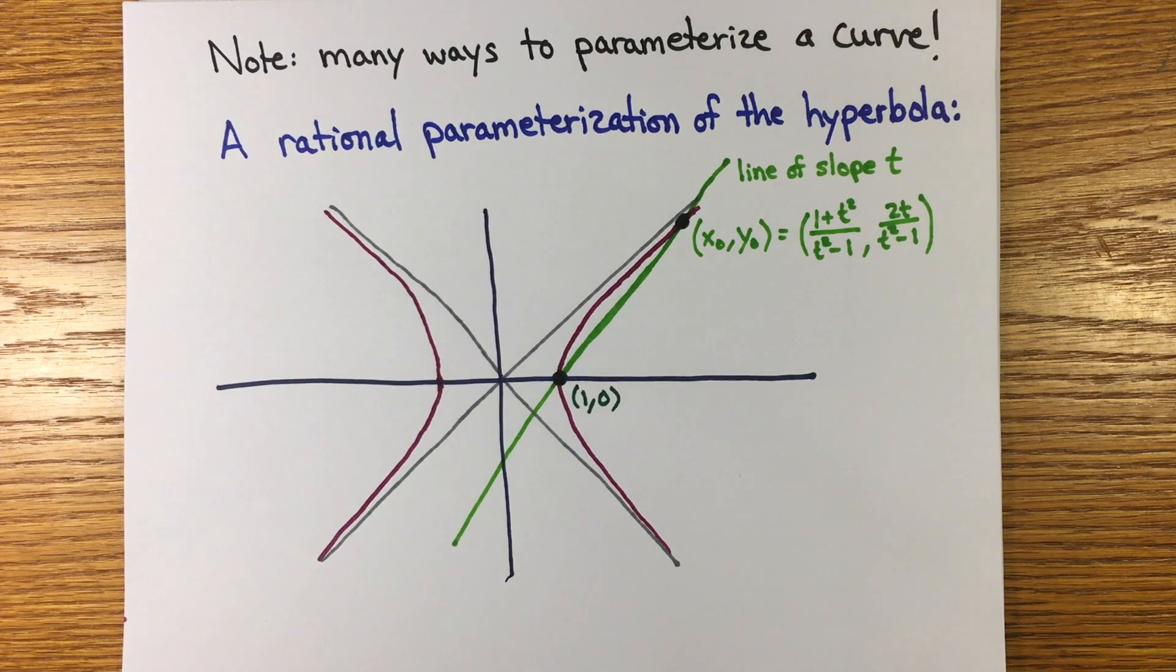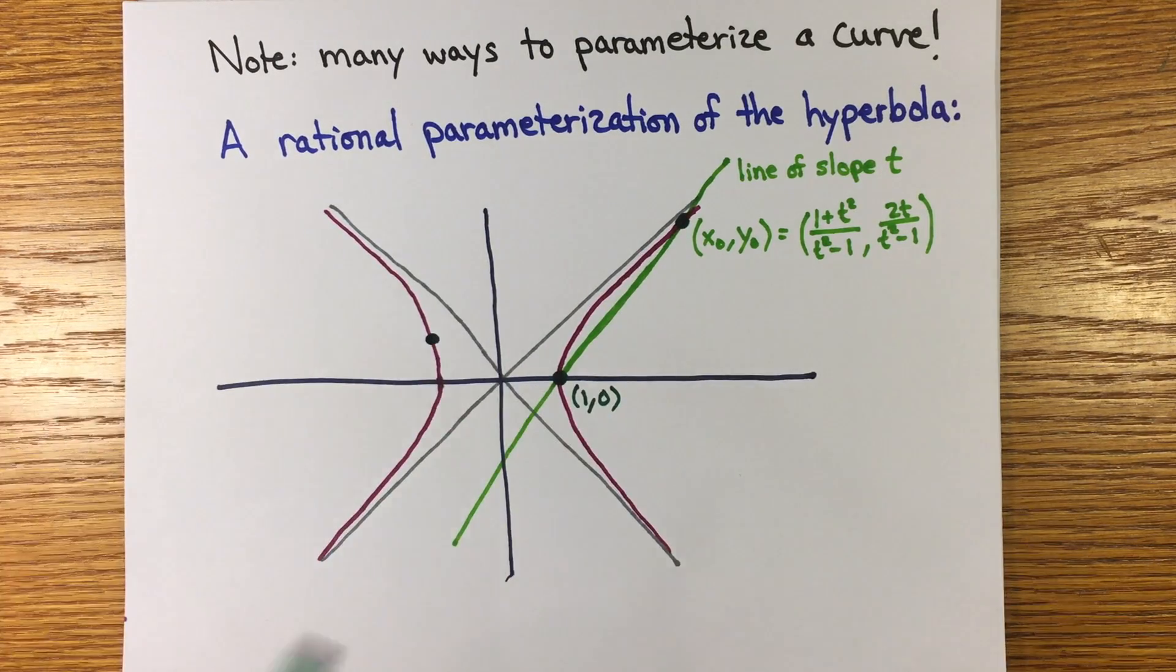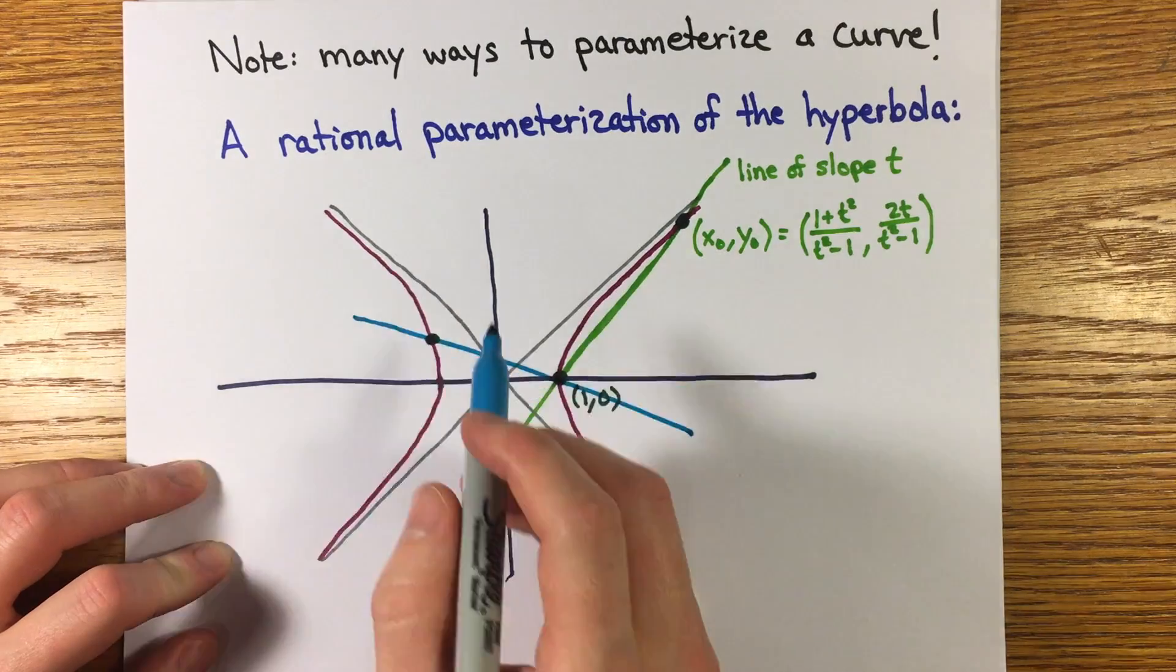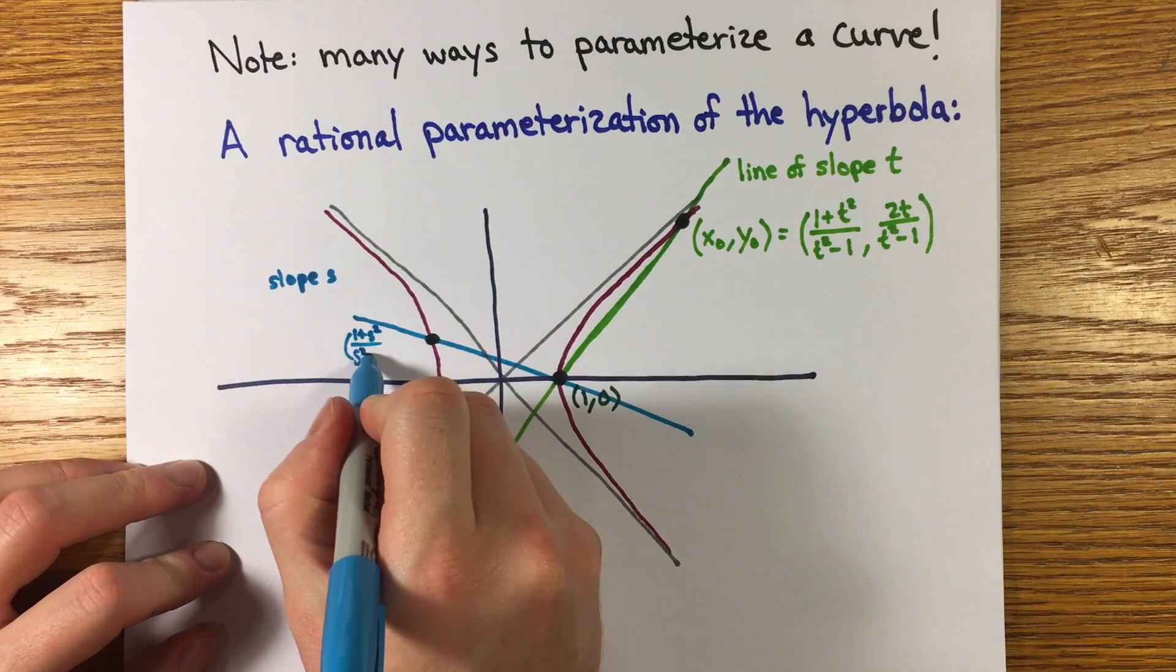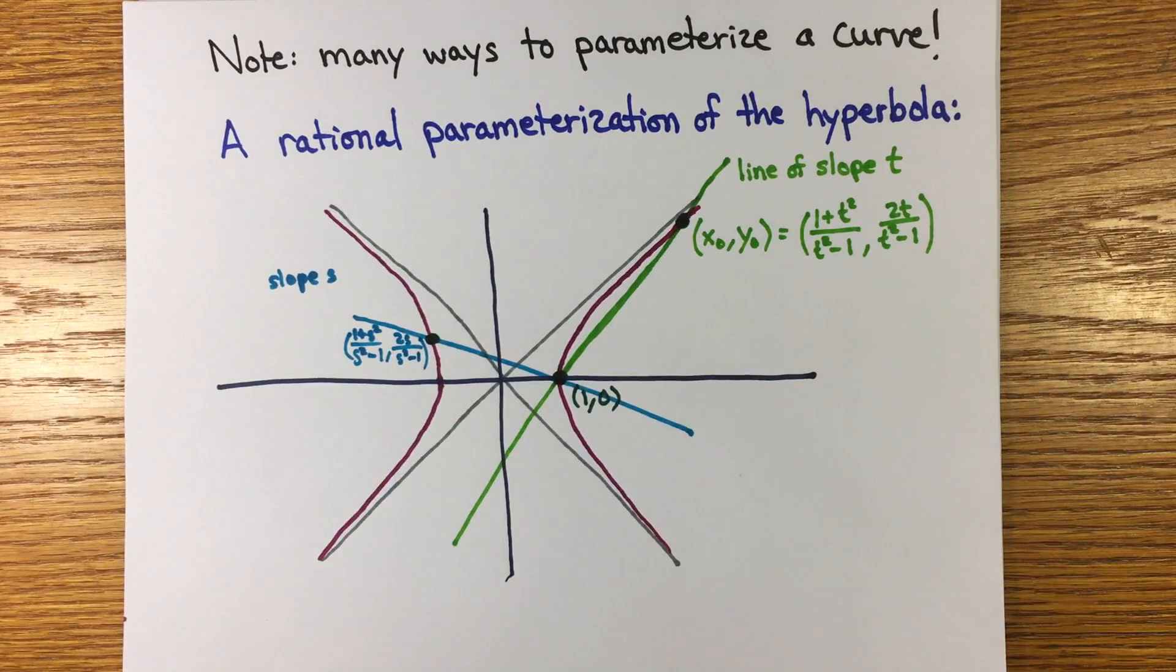You can think about why if the slope t is rational, then the second point of intersection has to have rational coordinates. If the absolute value of t is greater than 1, then this point is on the right half. If the absolute value of t is less than 1, then the point is on the left half. What happens when t equals 1 or minus 1? This is a parametrization of the hyperbola, but it doesn't have the analytical properties we want in terms of differential equations or addition properties.